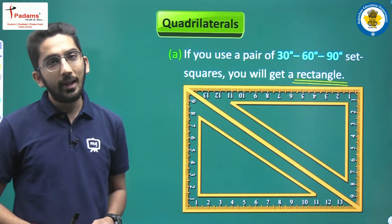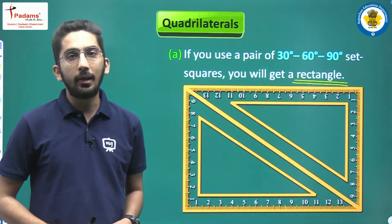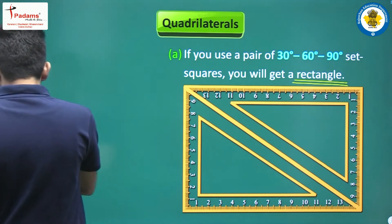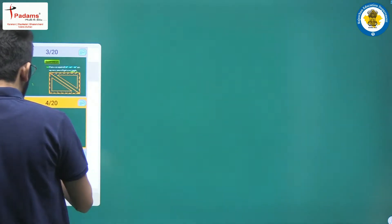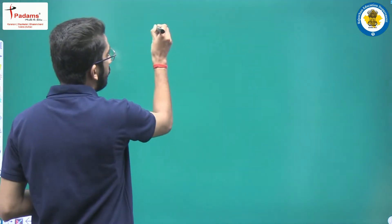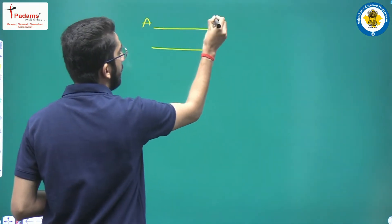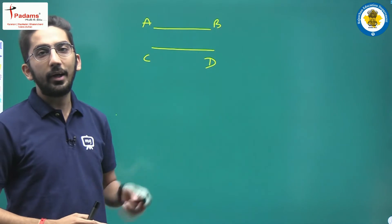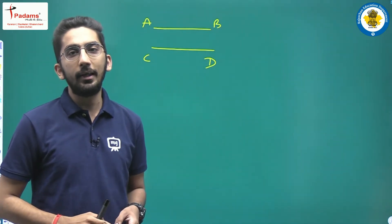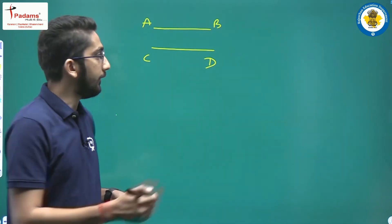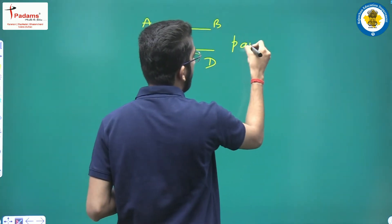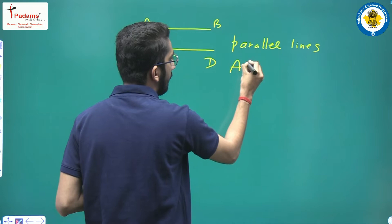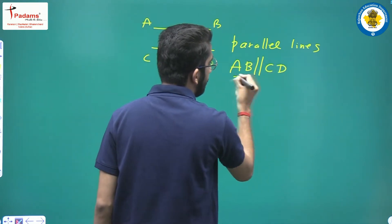We have to read the properties of quadrilaterals. First, let's understand parallel lines — lines which will never intersect. If we have two lines which will never intersect, then we say these lines are parallel lines. For example, AB and CD are parallel lines, which we denote as AB is parallel to CD.